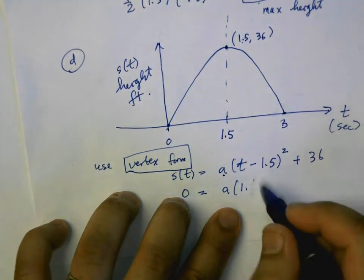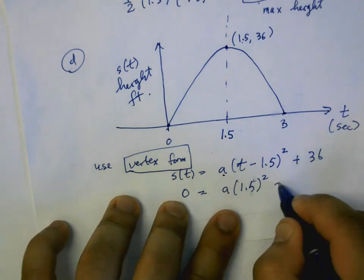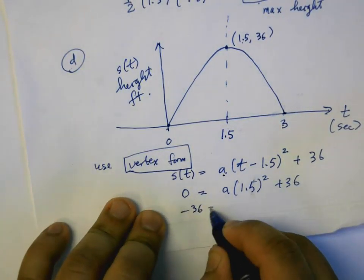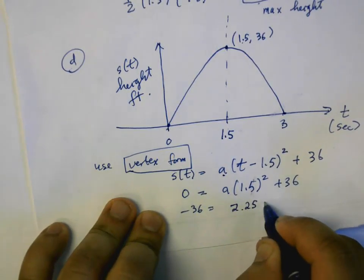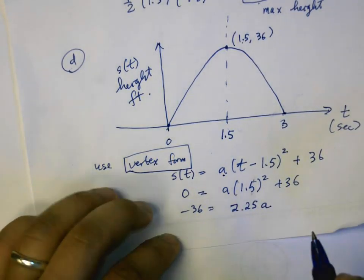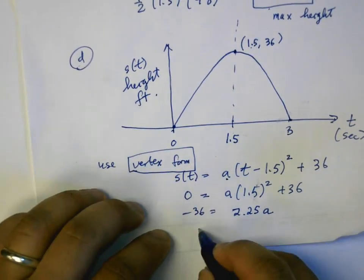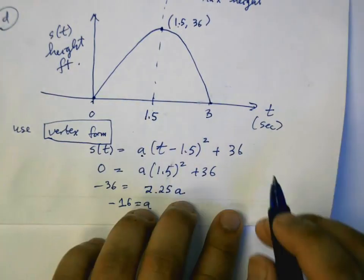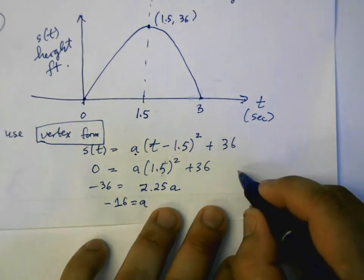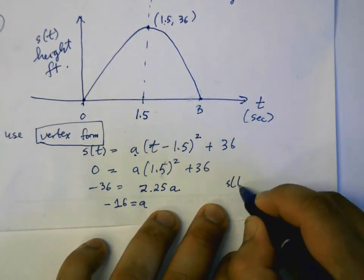Part C: how far has the rock traveled at its maximum height? In other words, how far has it traveled between 0 and 1.5 seconds?